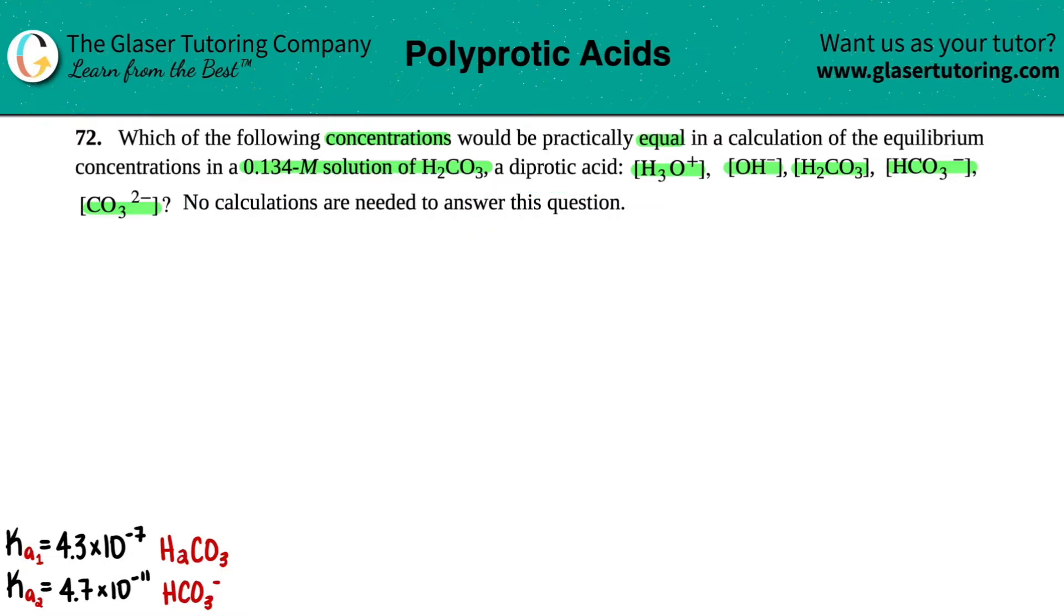Okay, so this question, how we're going to answer it is we have to pull up the Ka values for the acid, carbonic acid. Now they said that there was a diprotic acid.